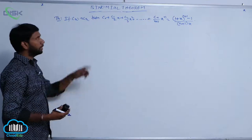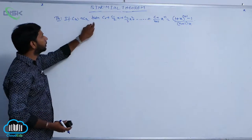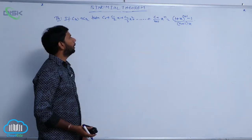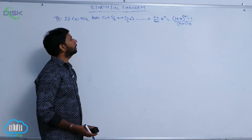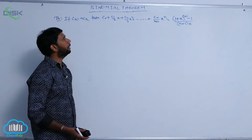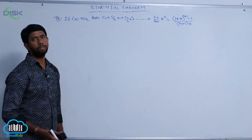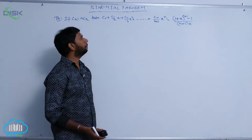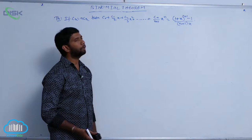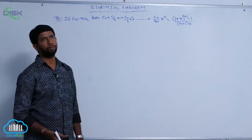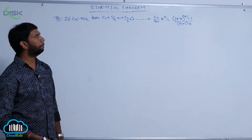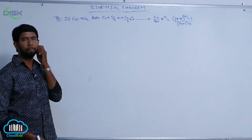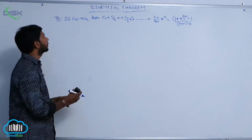If C_r = nC_r, then C₀ + C₁/2·x + C₂/3·x² + ... + Cₙ/(n+1)·xⁿ = [(1+x)^(n+1) - 1] / [(n+1)x].